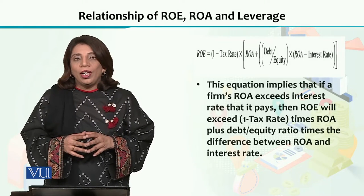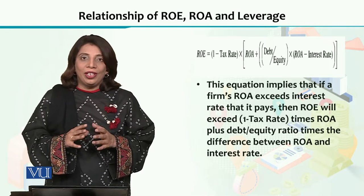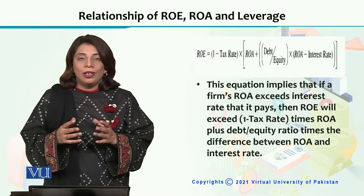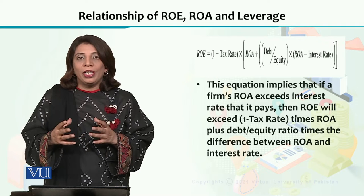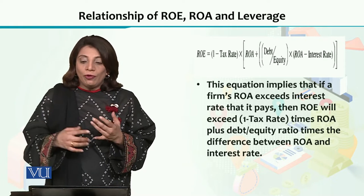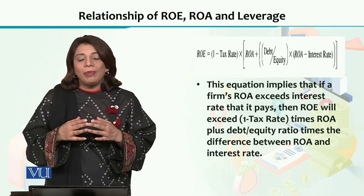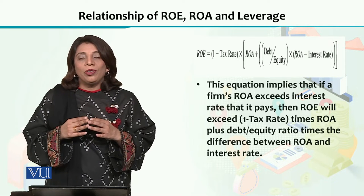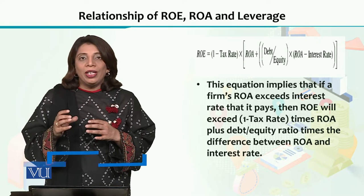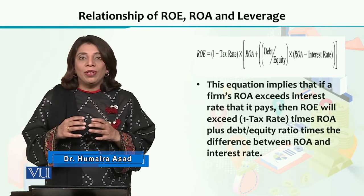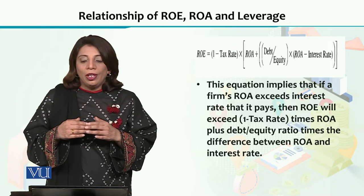Financial leverage ka aapke ROA aur ROE, yani return on assets and return on equity, ke saath bhi lena dena hai. Means if you are borrowing money, aapko uske upar interest deni hai. Toh jab aapka return on assets aur return on equity ko aap account for karenge, toh yeh cheez usko effect karti hai. ROE has been explained in terms of financial leverage, aur is formula se you can have an idea how these two things are linked up with return on equity.